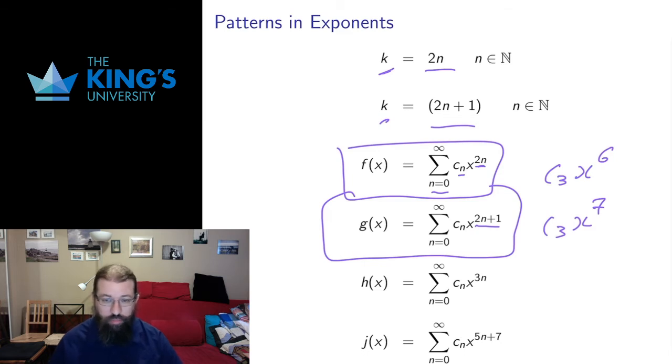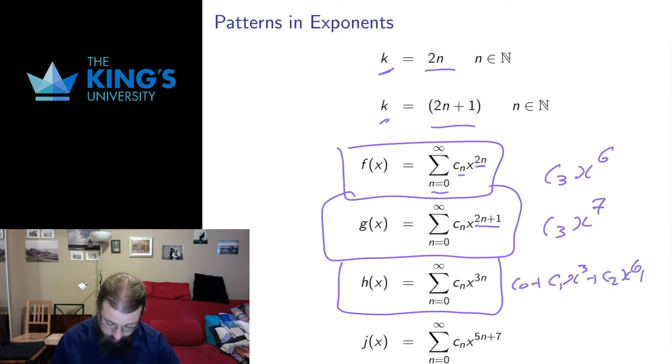And I can do this with all sorts of patterns. Odds and evens are the most common, but I can certainly do it for other ones. If I wanted only numbers which are multiples of 3, I could write the sum n equals zero to infinity cₙx³ⁿ. And so this would be c₀ plus c₁x³ plus c₂x⁶ and so forth. I could do a series like that. And these patterns of exponents can be as simple or as complicated as you want. Here's a series that starts at 7 and only includes each term where I add 5 to the exponent after that. All of these patterns are reasonable.